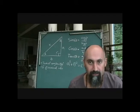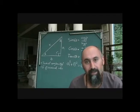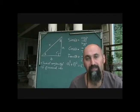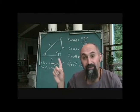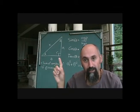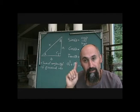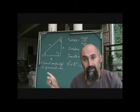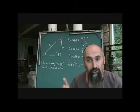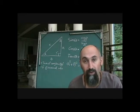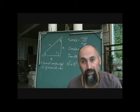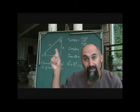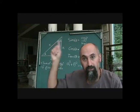Right angle triangles — basically triangles that have a 90 degree angle in them. One thing to keep in mind is that the sum of the angles in a triangle equals 180. And there are six pieces of information in a triangle: three angles and three sides.